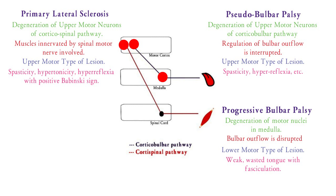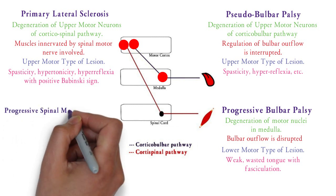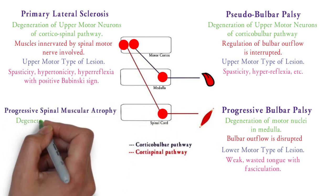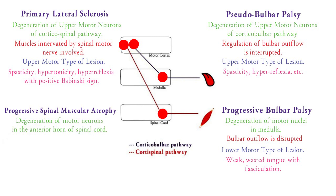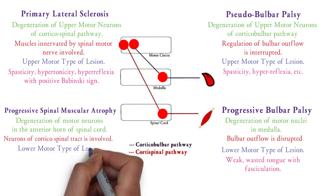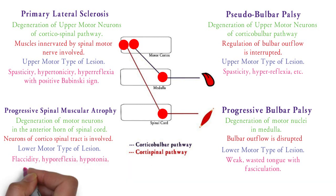The next is the lower motor neuron type of disease, which is progressive spinal muscular atrophy. Here there is loss of motor neurons in the anterior horn cells of the spinal cord. So lower motor neurons are involved and the presentation will be flaccidity, hyporeflexia, hypotonia, and atrophy with fasciculations. So primary lateral sclerosis and progressive spinal muscular atrophy were upper and lower motor neuron type diseases of the spinal cord.